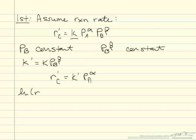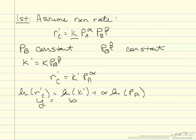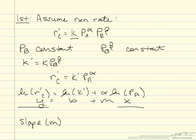We take the natural log of both sides of this expression and end up with an equation that looks like Y equals B plus M times X. We can then plot the natural log of the reaction rate of C versus the natural log of the partial pressure of A in Excel and get a linear best fit line, where the slope M equals reaction order alpha and the intercept B equals the natural log of K prime.